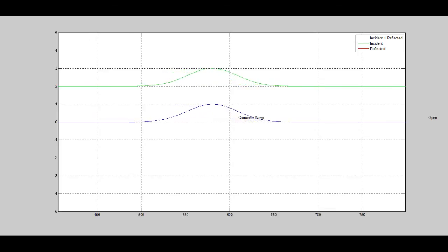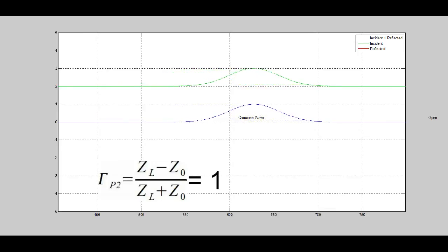This pulse, the blue line, is going into an open. Now since the ZL is infinite and the Z0 is finite, the reflection is going to be 1, normalized 1.